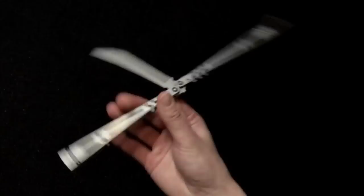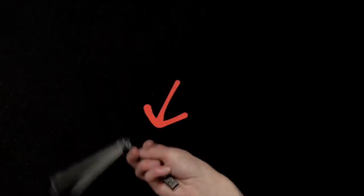Once you initiate the thumb rollover, you will want to move your pointer finger out of the way. As the knife comes down, you will slip your pointer finger behind the handle.